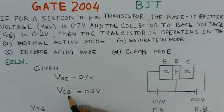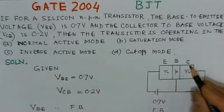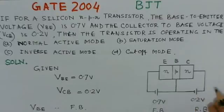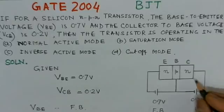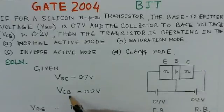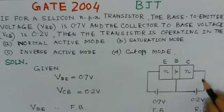Now, the other bias is Vcb, the collector base is 0.2, that means collector is more positive with respect to base by 0.2. So we have made it that way, collector is more positive by 0.2. So this bias here,